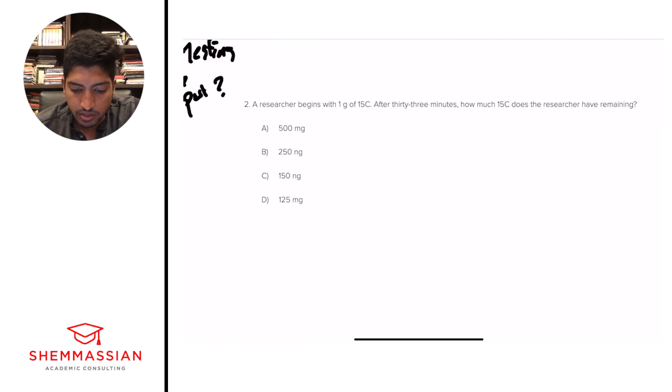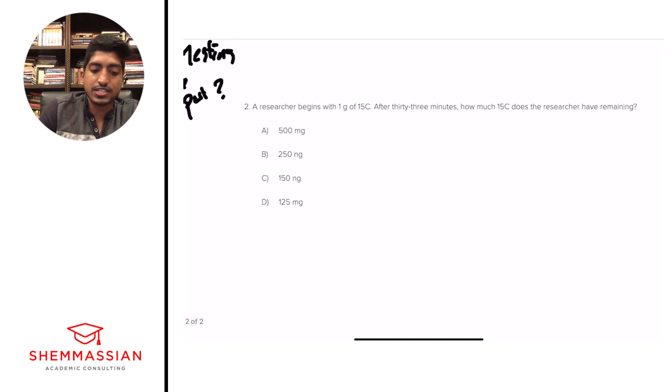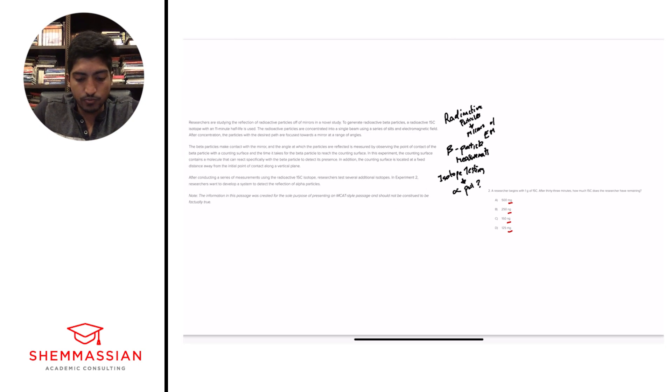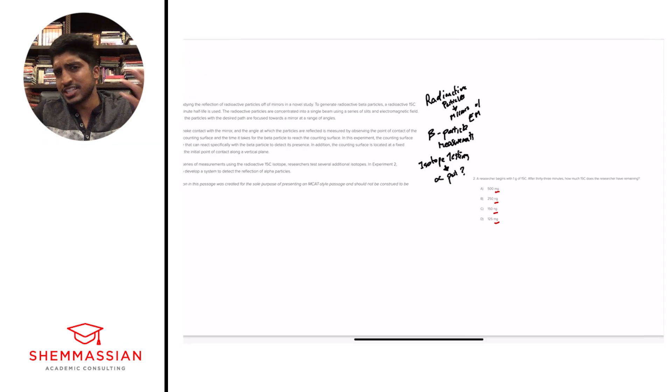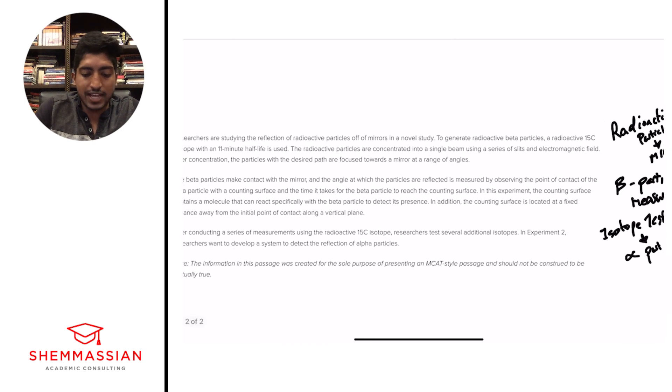Alright. A researcher begins with one gram of 15C. After 33 minutes, how much 15C does the researcher have remaining? A, 500 milligrams. B, 250 nanograms. C, 150 nanograms. Or D, 125 milligrams. Alright, right away from reading the answer choices, we're going to have to focus in on milligrams and nanograms. We have different units, and so just always be careful of this. With that, we need to reckon that this has to do with some sort of time period in half-life that we talked about earlier. When we see something after a certain number of minutes, or when we begin with a certain amount of substance, how much is left, we usually think half-life.